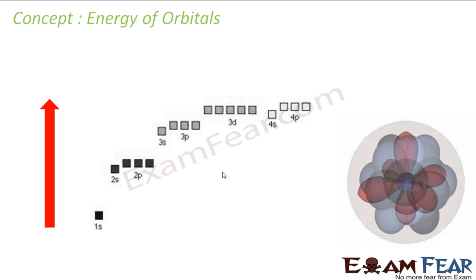Before we start, let's understand the concept of energy level. Between 1s and 2s, there is a huge difference in energy. Between 2s and 2p, there is a huge difference. Between 3s and 3p, there is a huge difference as well.